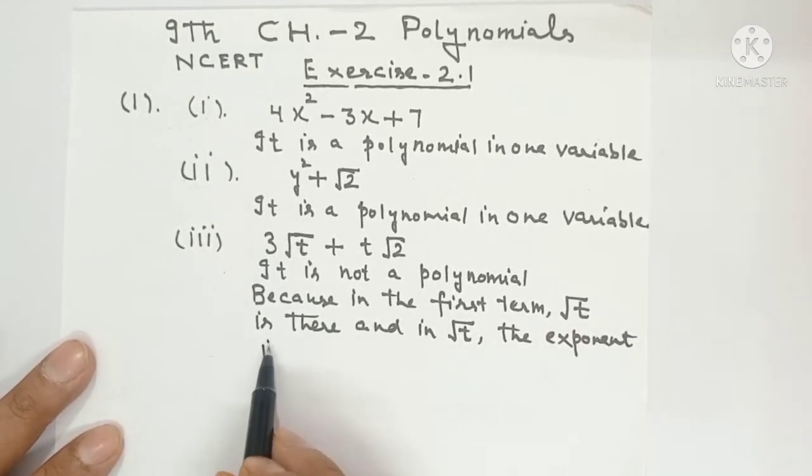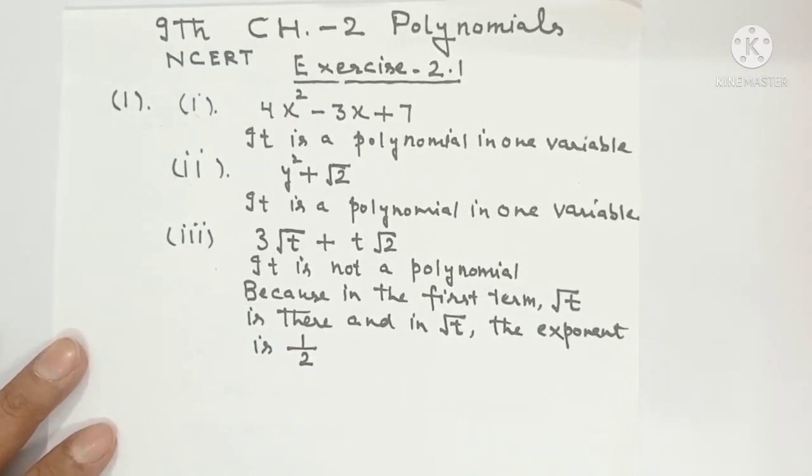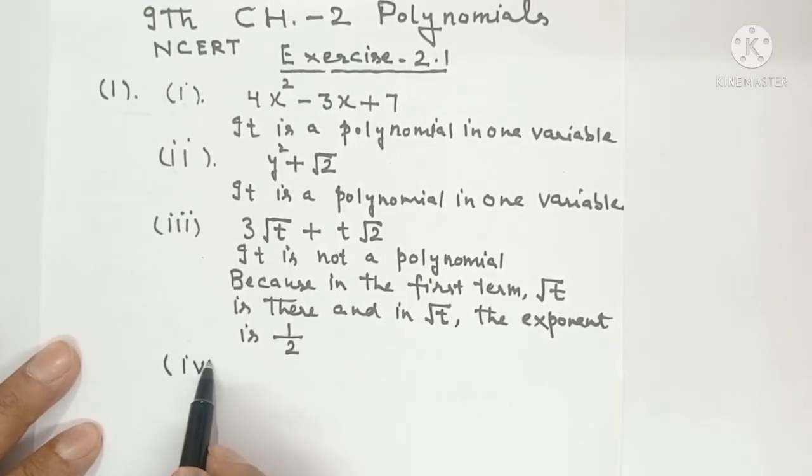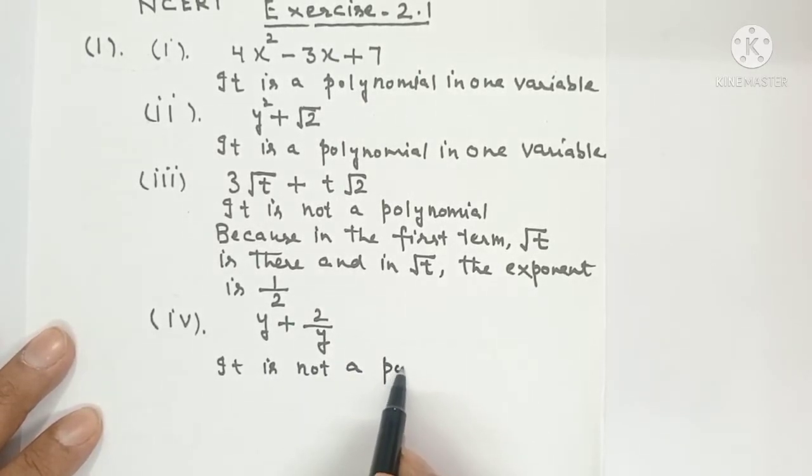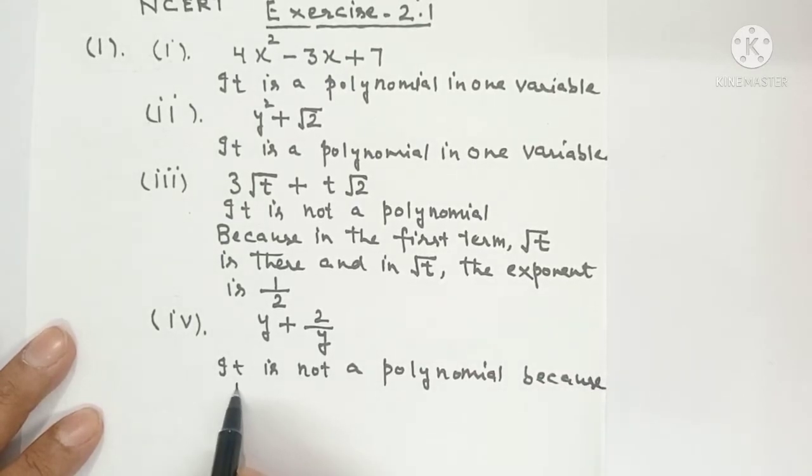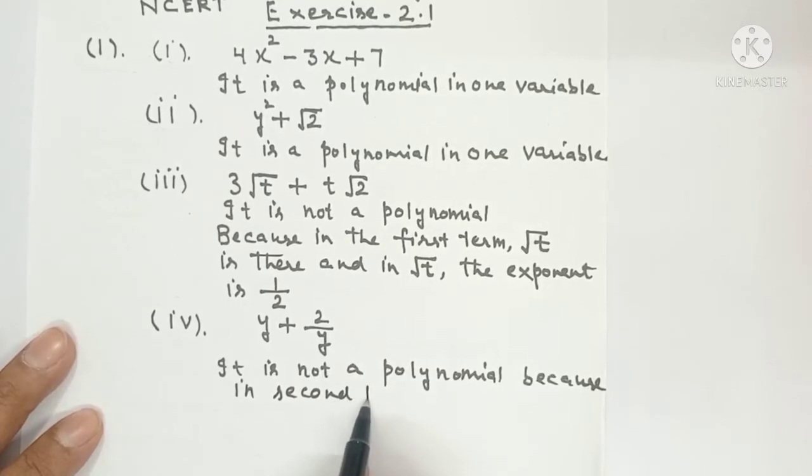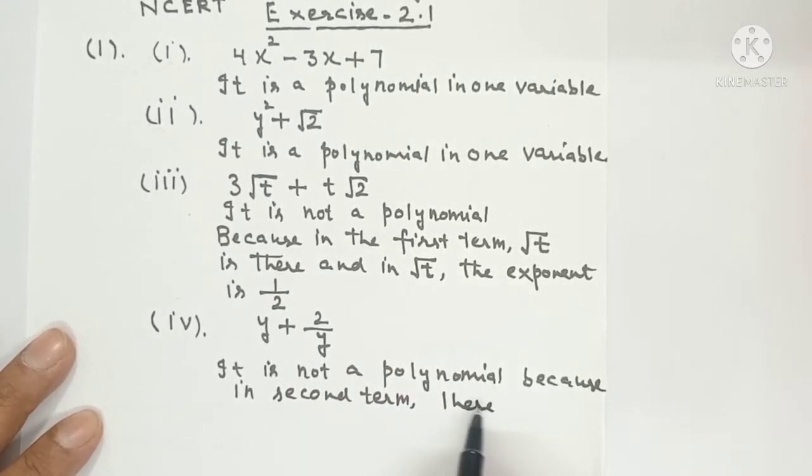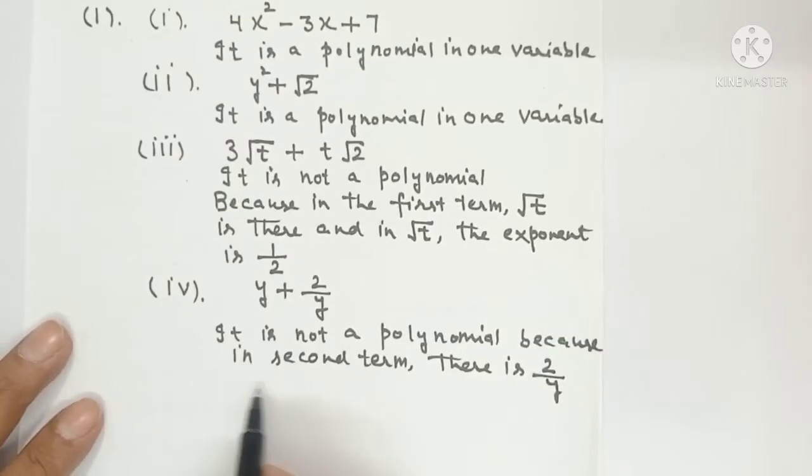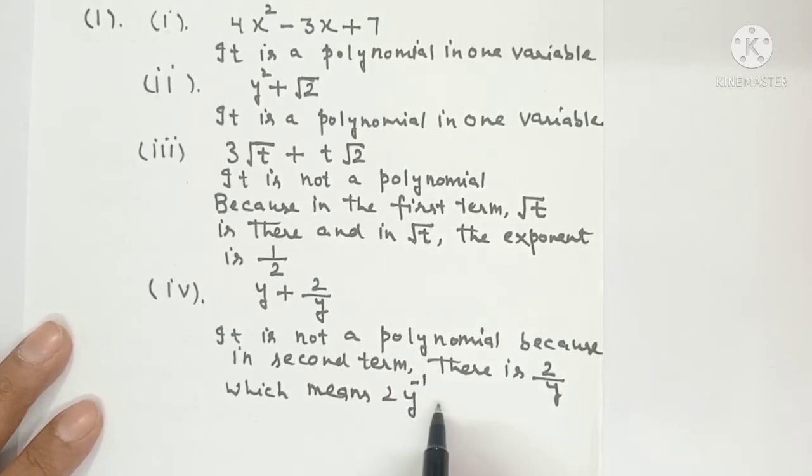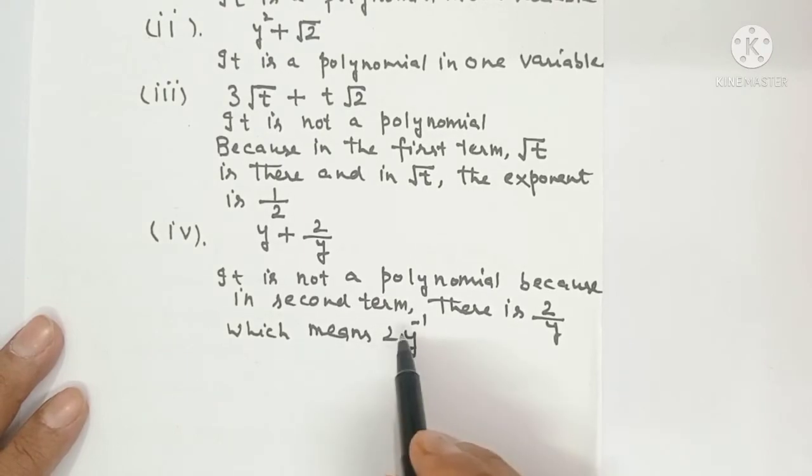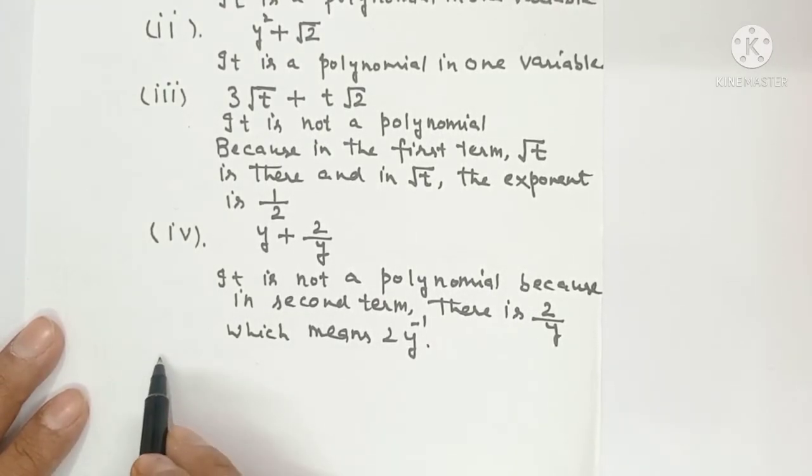Part number 4 y plus 2 upon y. This is also not a polynomial. It is not a polynomial because in second term there is 2 upon y which means 2 and y power minus 1. So y ki power minus 1 cannot be, we need non negative integer.